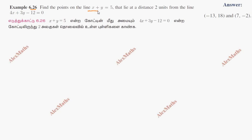Find the points on the line x plus y equals 5 that lie at a distance 2 units from the line 4x plus 3y minus 12 equals 0.